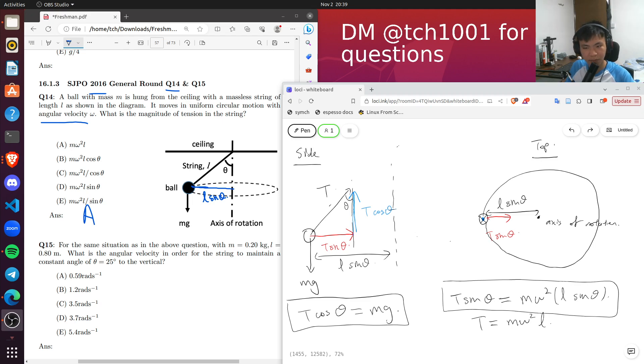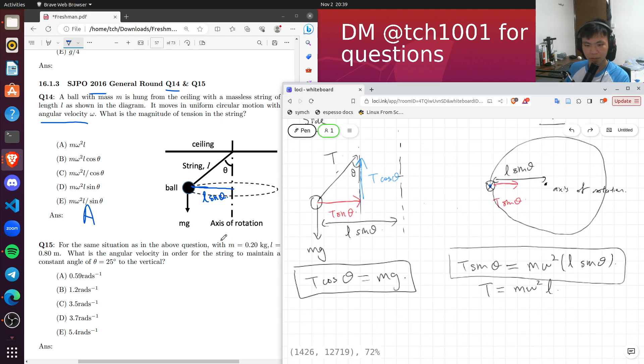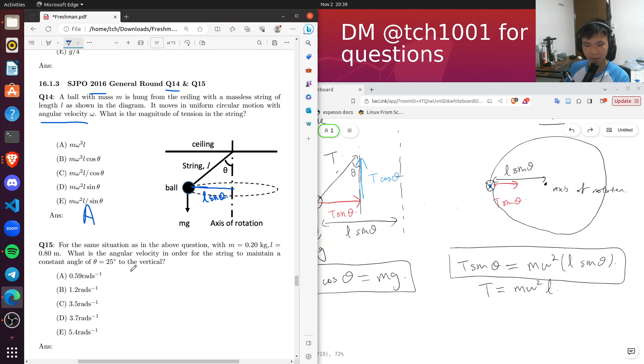So question 15, it's the same setup. Now we are asked to find the angular velocity required to maintain a constant angle of theta equals to 25 degrees.